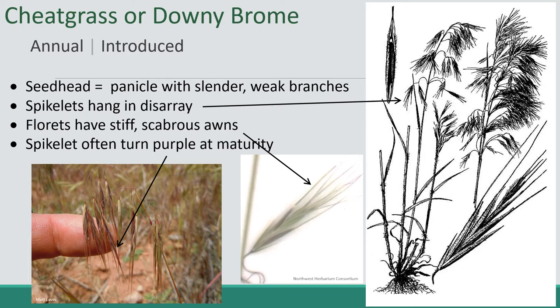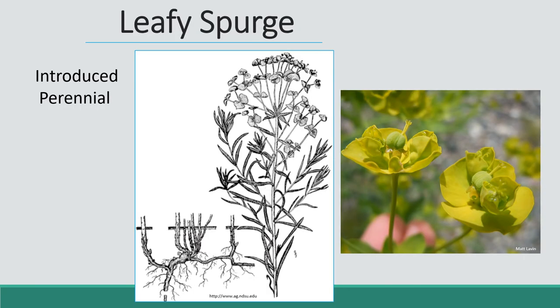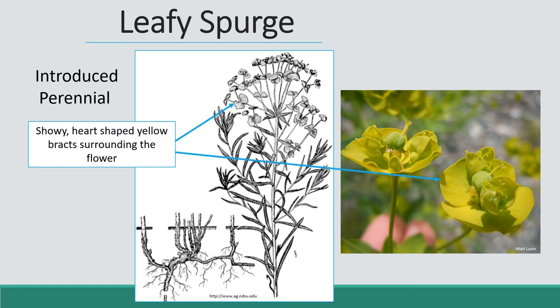Now let's turn to a perennial plant that is quite a problem: leafy spurge. It's an introduced perennial and the most obvious thing about it is that it has yellow bracts — heart-shaped modified leaves at the base of the flower. The flower itself is just a small sphere in the middle. It's a very nondescript flower but those bracts make it a showy plant that you can see from quite a distance. It has dark roots that can grow very deep into the soil, and those roots have pink buds. If you cut off the top, those buds will be activated and send up a whole bunch of new plants.